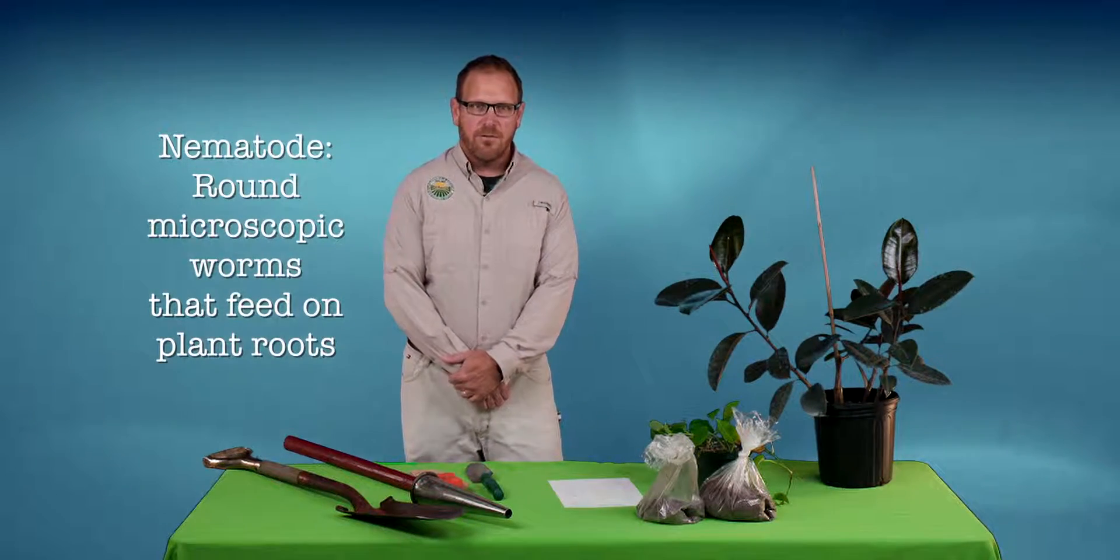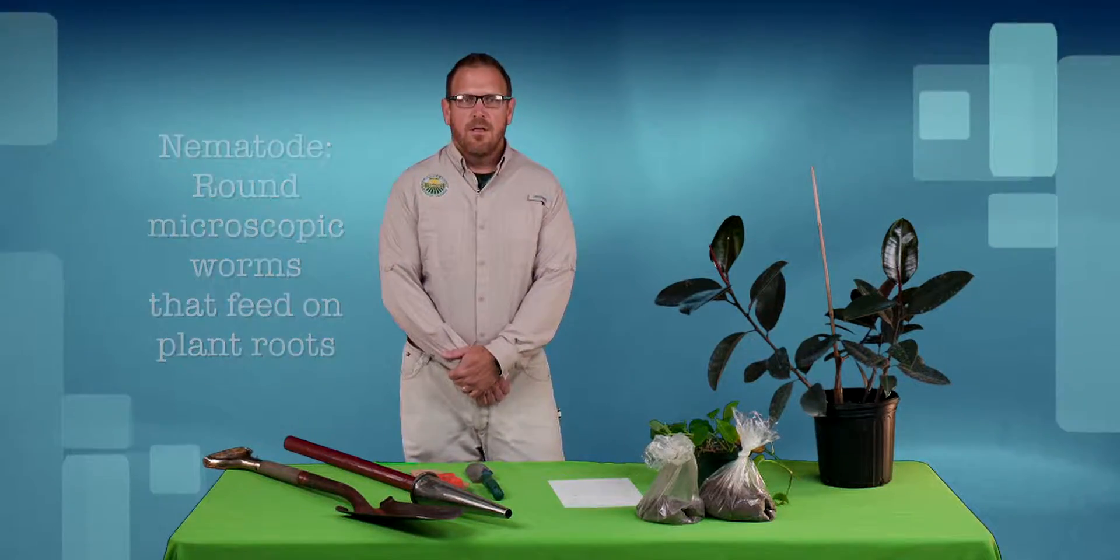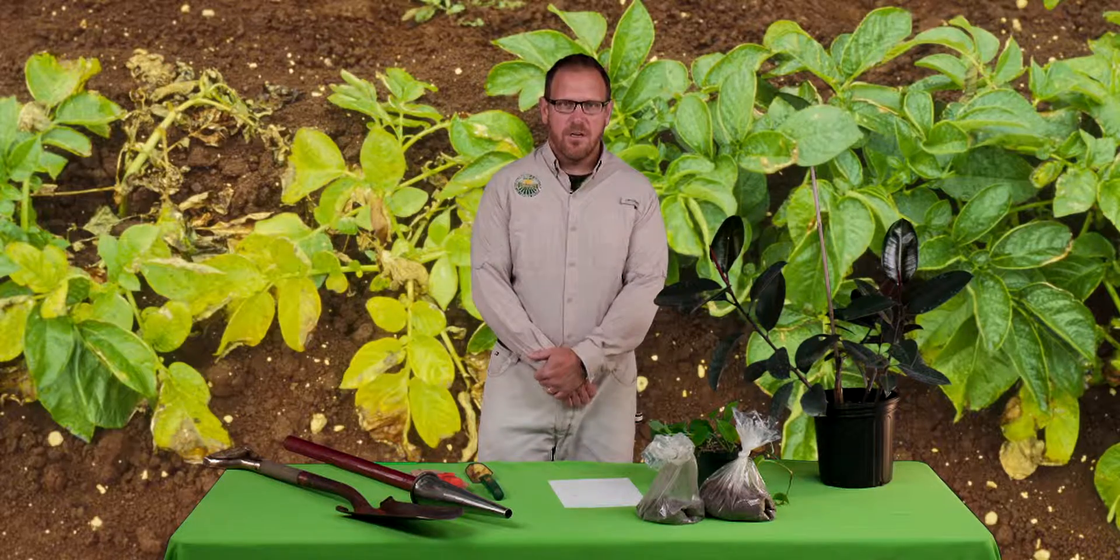Nematodes are round, microscopic worms that feed primarily on plant roots. Symptoms of nematode infection include yellowing, wilting, and general decline of plants.